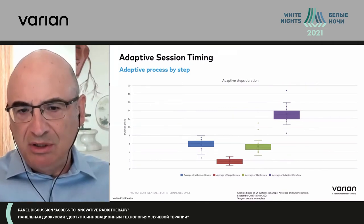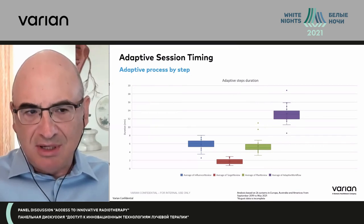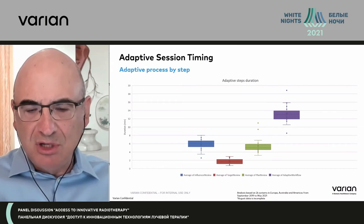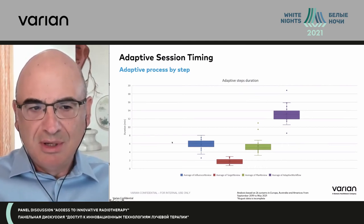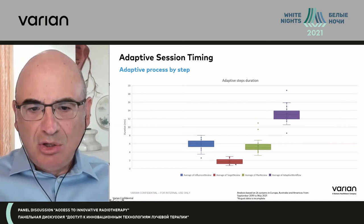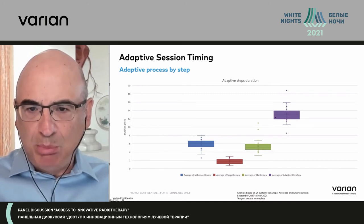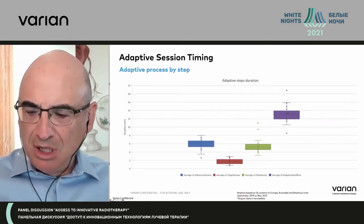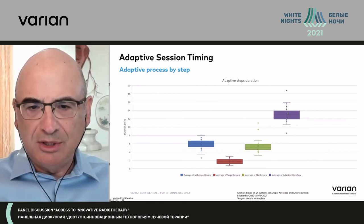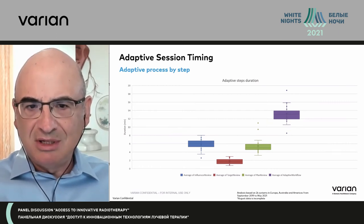This chart shows the breakdown of the different steps during the adaptive process. On the x-axis are the different steps; on the y-axis is the time it takes. You can see in blue the influencer review — the time users have taken to review organs at risk — is somewhere around five to six minutes. Reviewing the target is about two minutes. Overall plan review is about five minutes. The overall total time it's taking to do the adaptive session is a little bit short of 14 minutes — still within the 15-minute target. It varies with more or less complex cases, but overall this is actually very efficient.